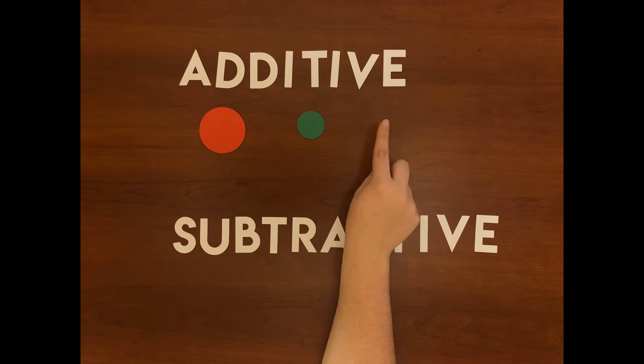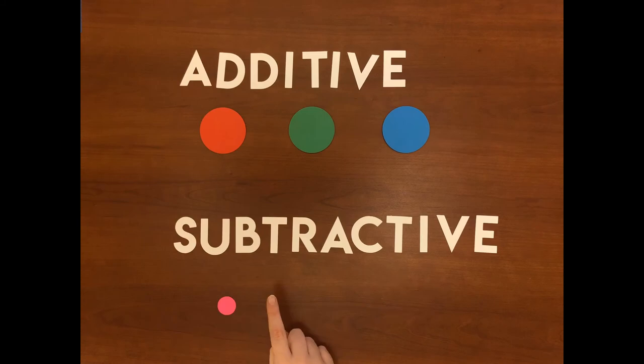In additive you have red, green, and blue. In subtractive you have magenta, yellow, and cyan. Additive deals with light and subtractive deals with paint and ink.